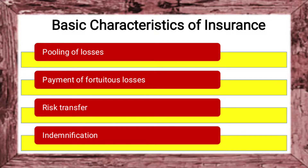So you have now understood the concept of insurance: the meaning, definitions, functional definition, and contractual definition. Next we have the characteristics of insurance. The main characteristics are: pooling of risk, payment of losses, risk transfer, and indemnification. These will be explained in the next classes. After that, we will cover insurable interest, functions of insurance, and principles of insurance — all aspects connected with insurance. Thank you.